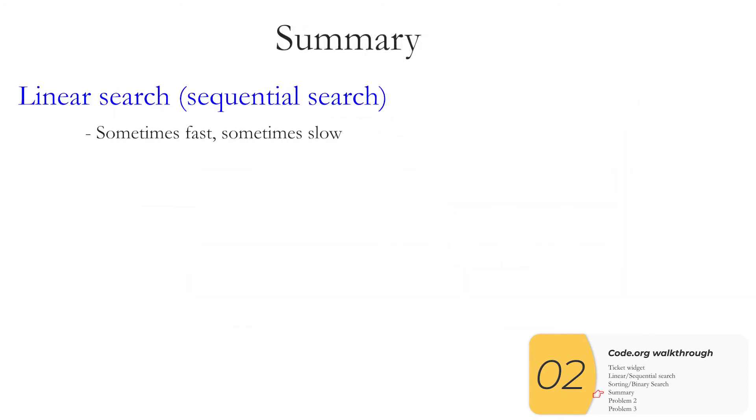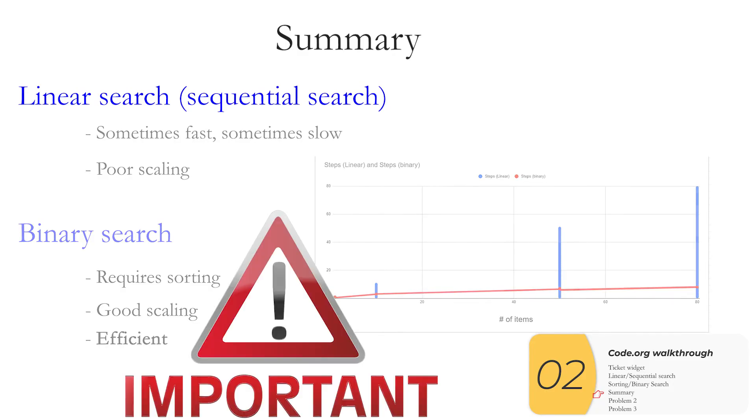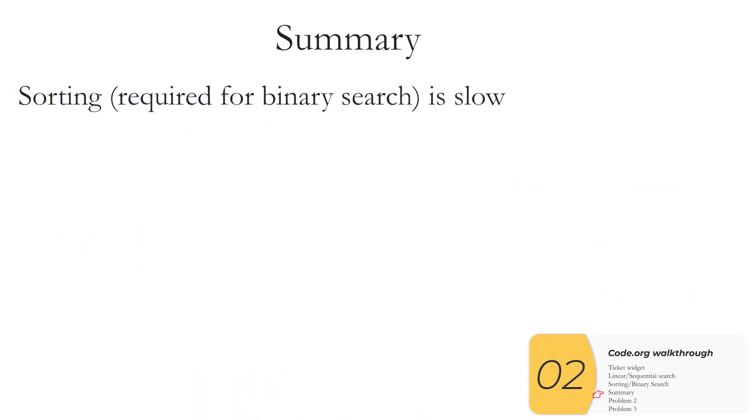So to summarize the whole thing linear search sometimes called sequential search is sometimes fast sometimes slow and overall will scale poorly. Binary search first you have to sort before you binary search but if you do it gives you good scaling and it can be more efficient than linear search. Efficiency is a term that appears on the AP exam. And finally one last point because I think this point gets glossed over by a lot of texts.